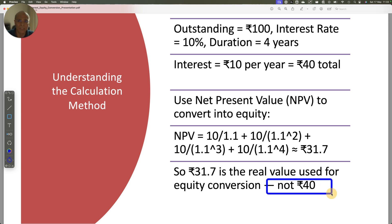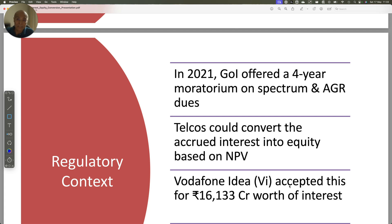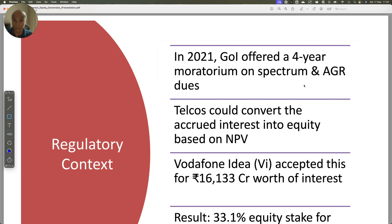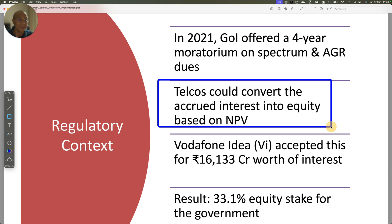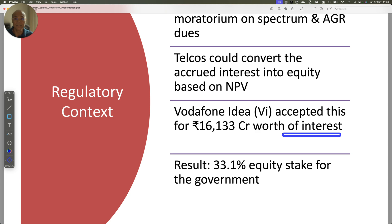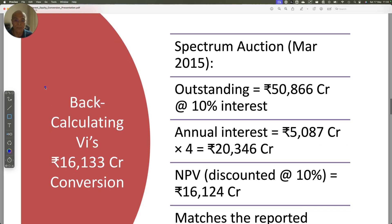This is a very important concept. If you don't understand it, there is no way to understand how interest calculations happened when the moratorium started, or what will happen in future if interest is again requested to be converted. In 2021, the government offered a four-year moratorium on spectrum and AGR dues. Telcos could convert the accrued interest into equity based on NPV. Vodafone Idea accepted this and converted Rs.16,133 crores worth of interest into equity, resulting in a 33.1% equity stake for the government.